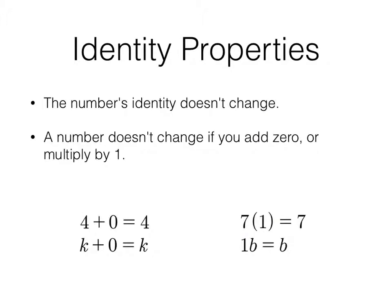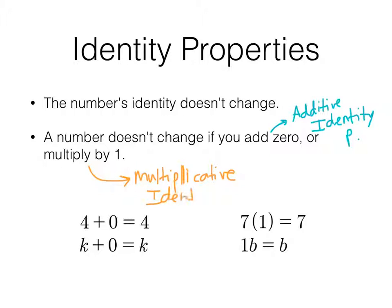A couple more. Identity properties. The number's identity doesn't change. It doesn't change whether you add 0 or multiply by 1. So adding 0, that is your additive identity property. And multiplying by 1, that is your multiplicative identity property. So let's take a look at these.